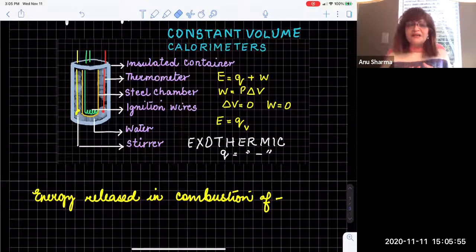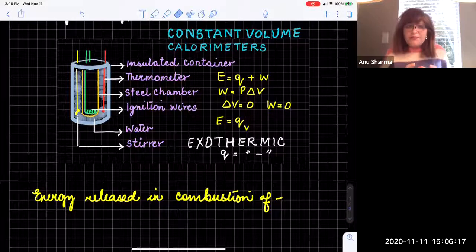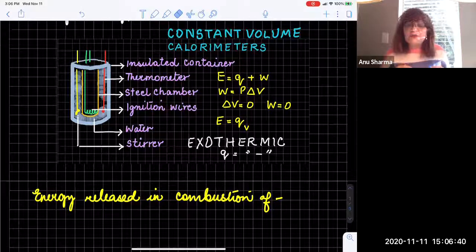Just to give a recap: this is a sealed, perfectly insulated container in which there is a reaction vessel made up of steel, and inside the reaction vessel we have ignition wires which ignite the reactions. Since it's a perfectly sealed container, none of the reactants in the form of gases can escape — they remain trapped inside. The amount of heat released is captured by the water surrounding the steel chamber, and that heat absorbed is reflected in the change in temperature read by the thermometers. A stirrer distributes the heat all around the chamber so we get a perfect reading.